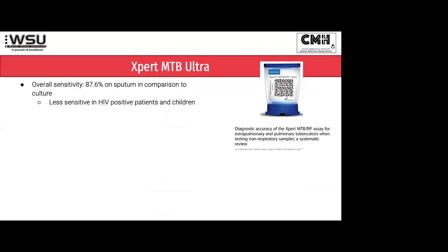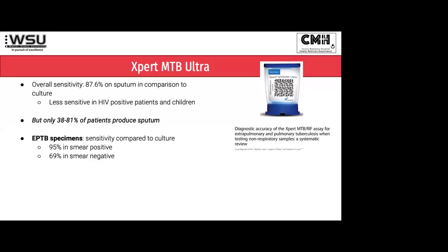The GeneXpert Ultra has a sensitivity of 87.6% compared to culture - very good. But it's not as great in HIV-positive patients or in children. The biggest issue is that only 38 to 81% - in some studies as few as 31% - of patients actually produce sputum. So we can do this lovely GeneXpert on sputum, but what if you can't get a sputum? There's been a big drive to look at what else we can do GeneXpert on. In extra-pulmonary TB specimens, compared to culture-positive results on that specimen, we have very good yield on the GeneXpert Ultra. More and more sample types are being made available to use the Ultra on.